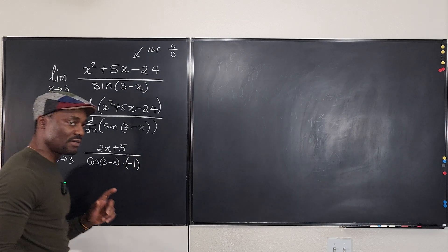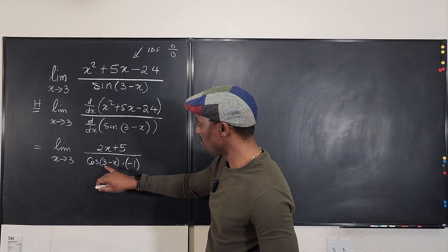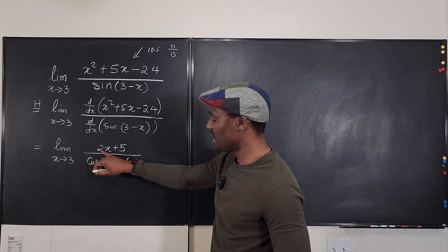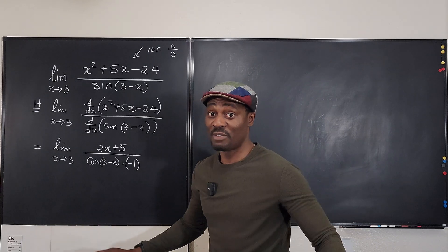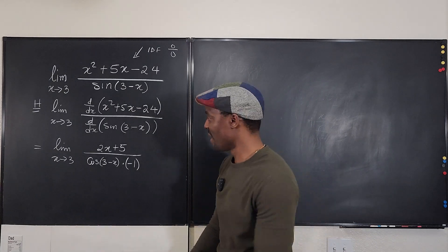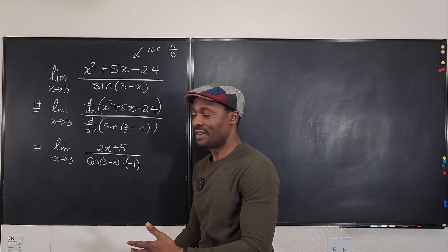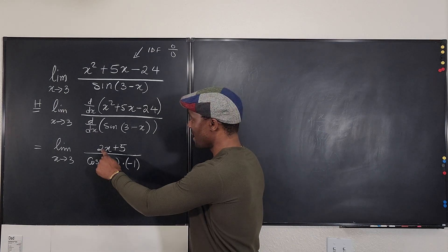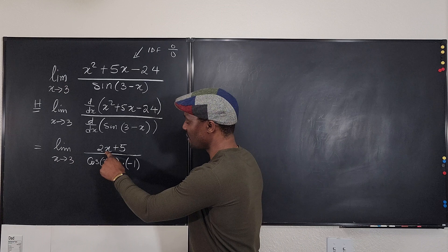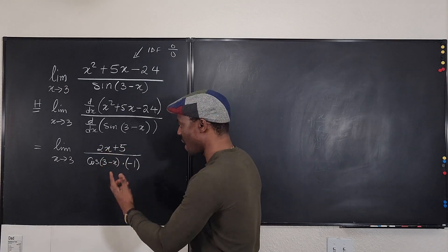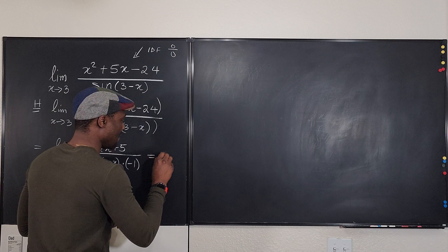Taking the derivative of sine(3 minus x): the derivative of the outside is cosine(3 minus x), multiplied by the derivative of the argument, which is negative 1. Now can we plug in 3 without a problem? If we plug in 3 to the top, we're not getting 0, so there's no issue. Plugging in 3 gives us 2 times 3 plus 5, which is 6 plus 5, that's 11.